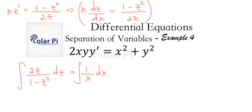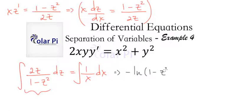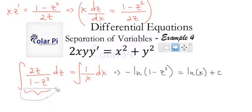Now we integrate both sides. On the left side we use a simple u-substitution, and we get negative ln|1 minus z²|. On the right side we get ln|x| plus C. We've combined constants from both sides into one constant C on the right.